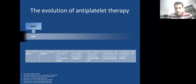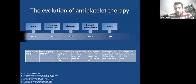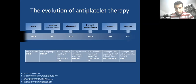Until the 1980s, aspirin was not being used. Clopidogrel only came into practice in 1998 and became mainstream for 10-20 years. It was not until 2000 that aspirin and clopidogrel together were shown to improve outcomes. Then came newer drugs: Prasugrel in 2009 and Ticagrelor in 2011.